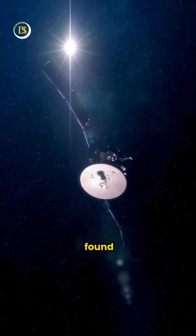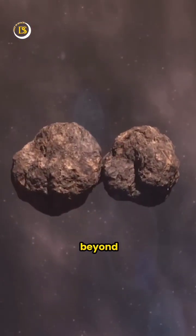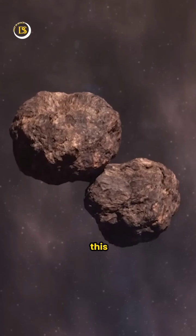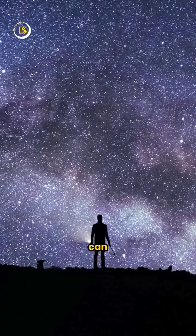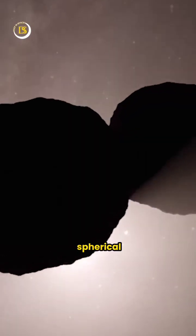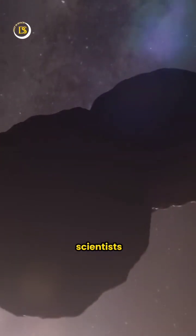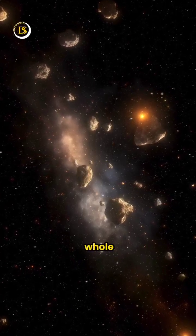The New Horizons spacecraft found an object called Arrokoth far beyond Pluto in space. It looks like a snowman. It's made up of two spherical rocks stuck together. It's the first time scientists have seen anything like this in the whole universe.